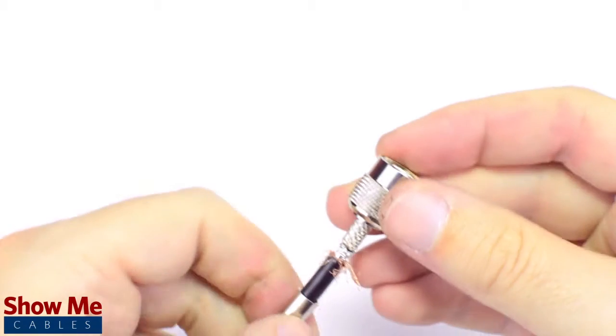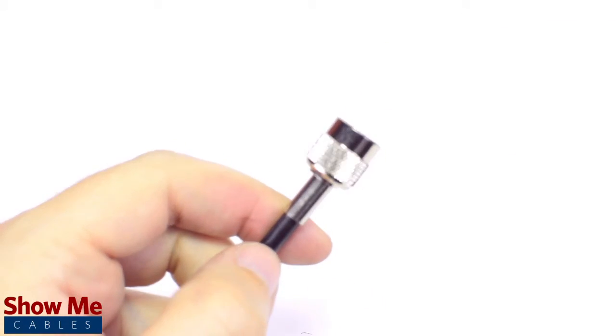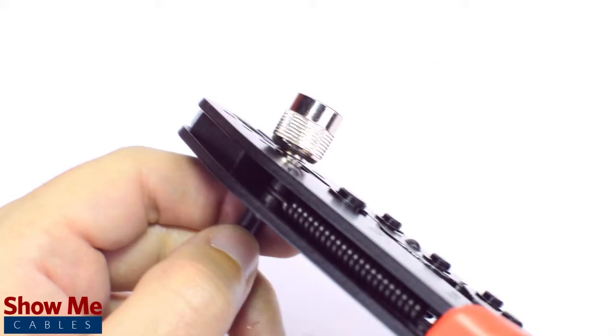Then slide the ferrule up to the base of the connector, folding the shield with it. Crimp the ferrule under the outer jacket to complete termination.